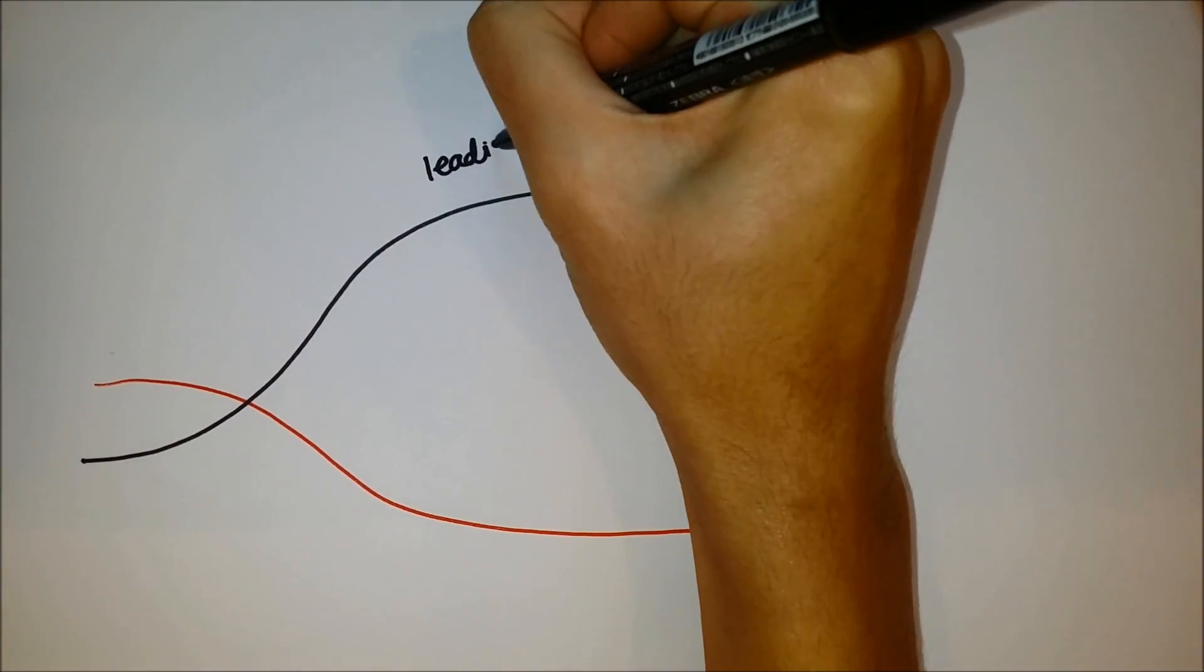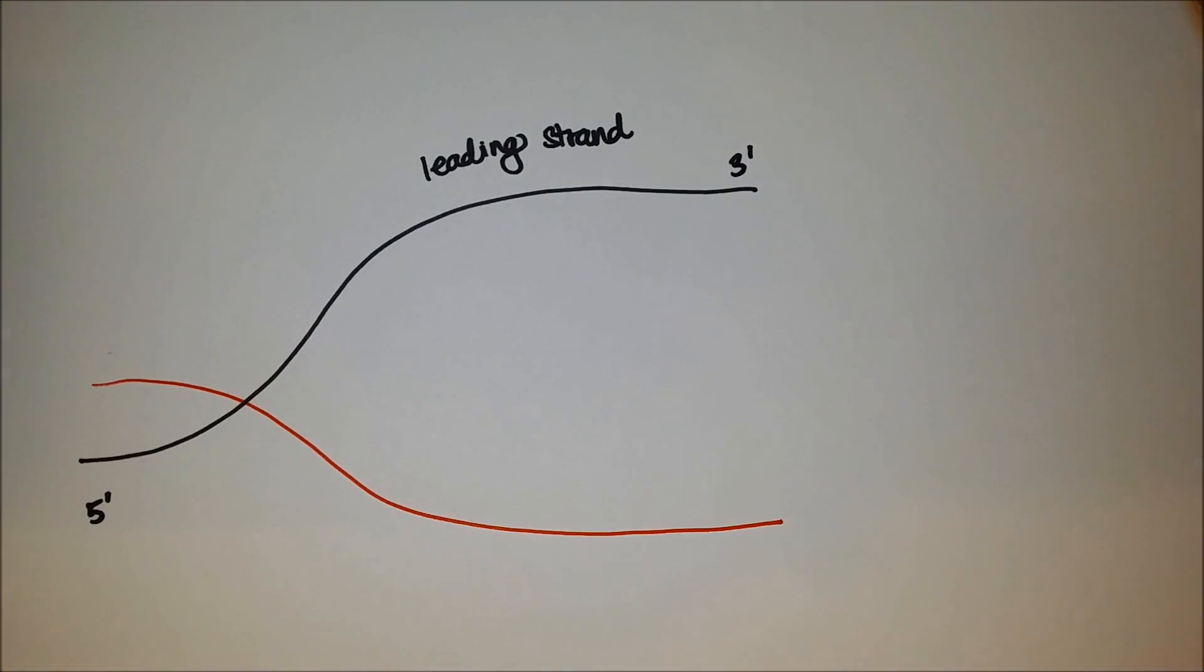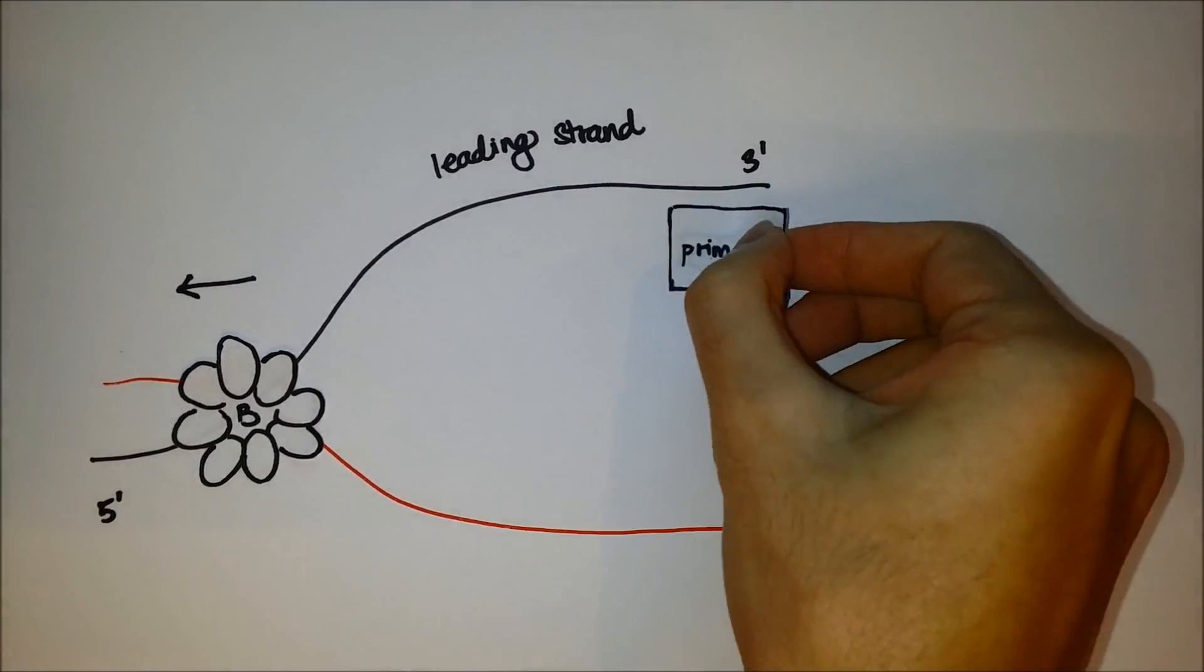DNA Polymerase 3 synthesizes the DNA, but only in 5' to 3' direction. So the template has to be read from 3' to 5' by the DNA Polymerase 3. But before the DNA can be synthesized, a primase has to produce a primer which is used to initiate the DNA synthesis.